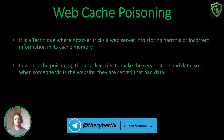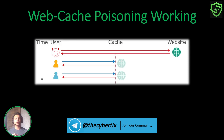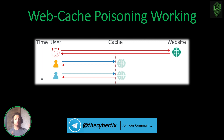In web cache poisoning, the attacker tries to make the server store bad data, so whenever a user visits that particular website they will be served with that bad data — like say, an attacker-hosted domain where malicious content is hosted. So how does web cache poisoning work? Suppose an attacker is the first user trying to access the website. Since no response is stored in the caching server, the original request is sent to the origin server first, and then the origin server passes through the web cache, which stores the response.